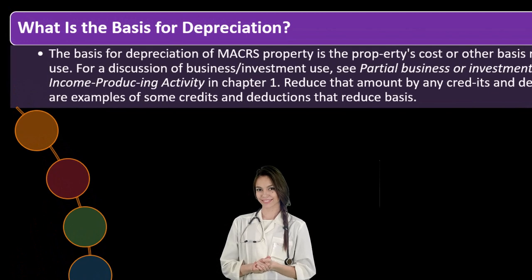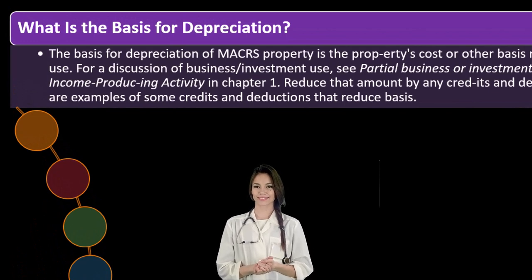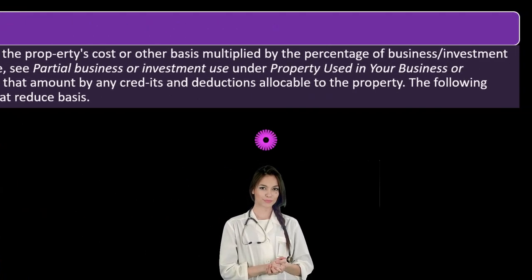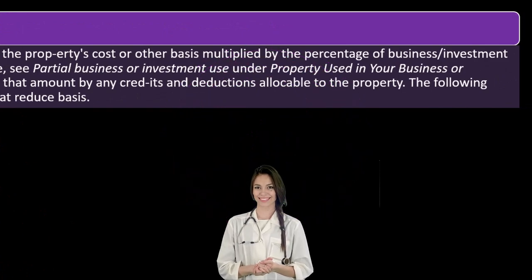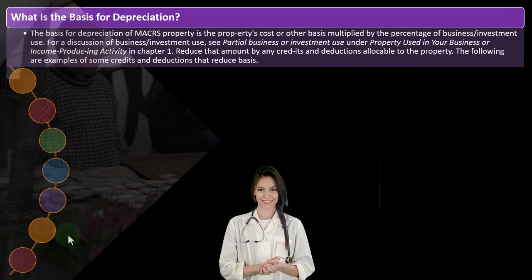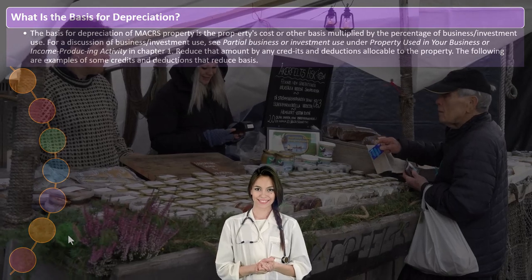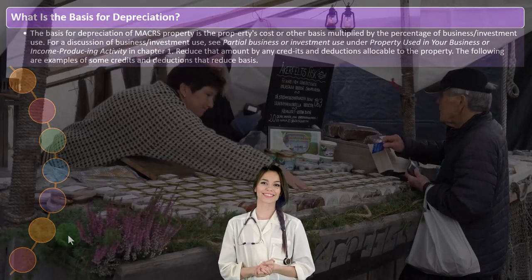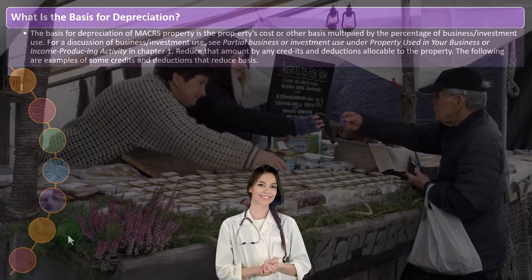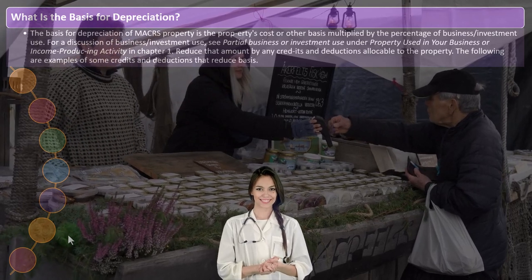For a discussion of business and investment use, see the partial business or investment use section under 'Property Used in Your Business or Income-Producing Activity' in chapter one. Reduce that amount by any credits and deductions allowable to the property.